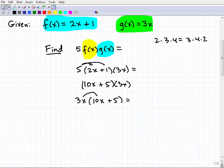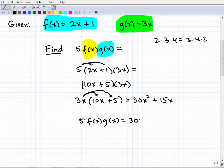Now we want to use the distributive property again. So 3x times 10x is, hopefully you wrote, 30x squared. And then 3x times 5 is going to be 15x. So 5f(x)g(x) would be equal to 30x squared plus 15x.